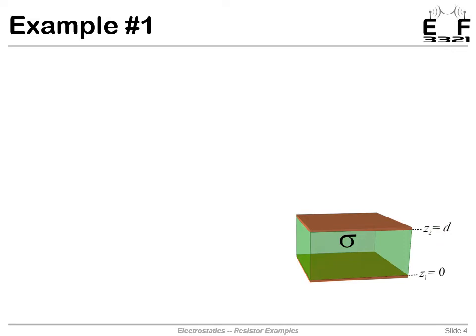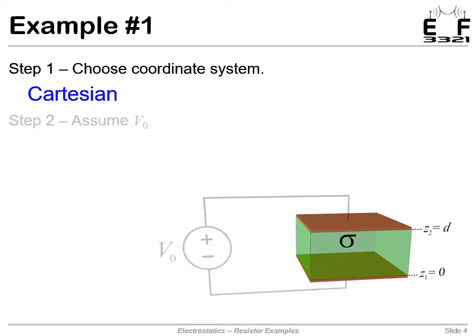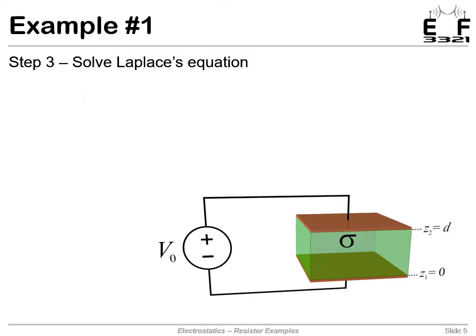Let's go ahead and apply the recipe that we outlined in the theory lecture. Step one was to choose a coordinate system. Well, this looks blocky to me, so let's choose Cartesian. The next thing we'll do is assume an applied voltage. So we apply a voltage of V-naught to it. Now that we know the potential at either plate, we're ready to solve Laplace's equation, del squared V equals zero.